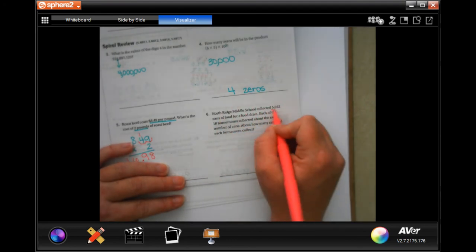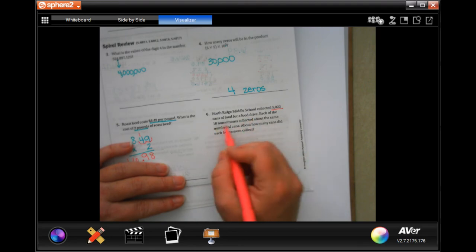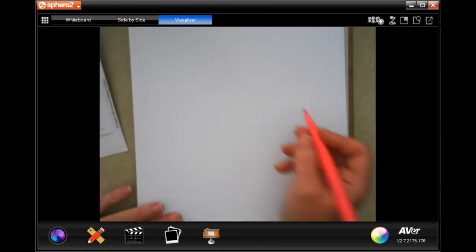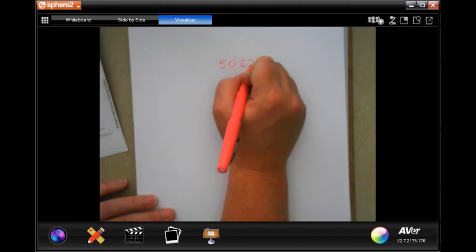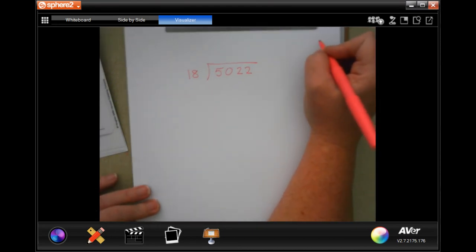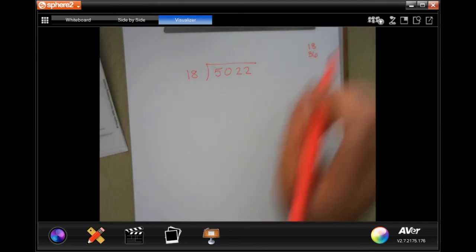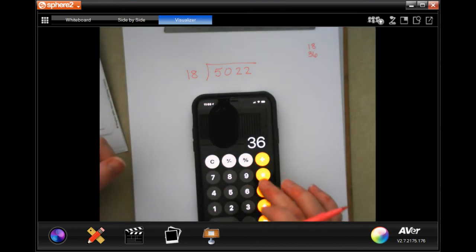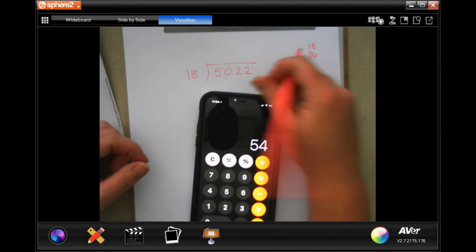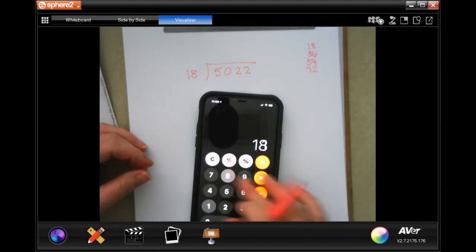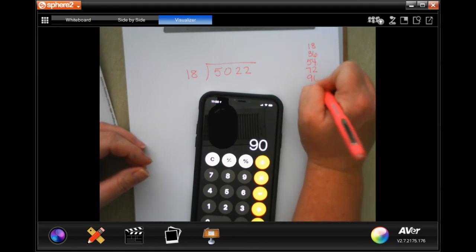Northridge Middle School collected 5,022 cans of food for a food drive. Each of the 18 homerooms collected about the same number of cans. About how many cans each homeroom collect. So we're going to come over here and we're going to do 5,022. And we're going to divide that by the 18 homerooms. So over in the corner here, I'm going to write down multiples of 18 because I really don't know those off the top of my head and no shame in my game.